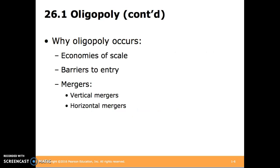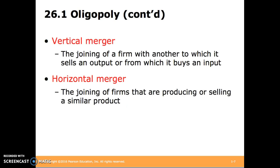How do oligopolies occur? Economies of scale, barriers to entry, or vertical or horizontal mergers can be the cause. Vertical mergers are the joining of a firm with another to which it sells an output or from which it buys an input.